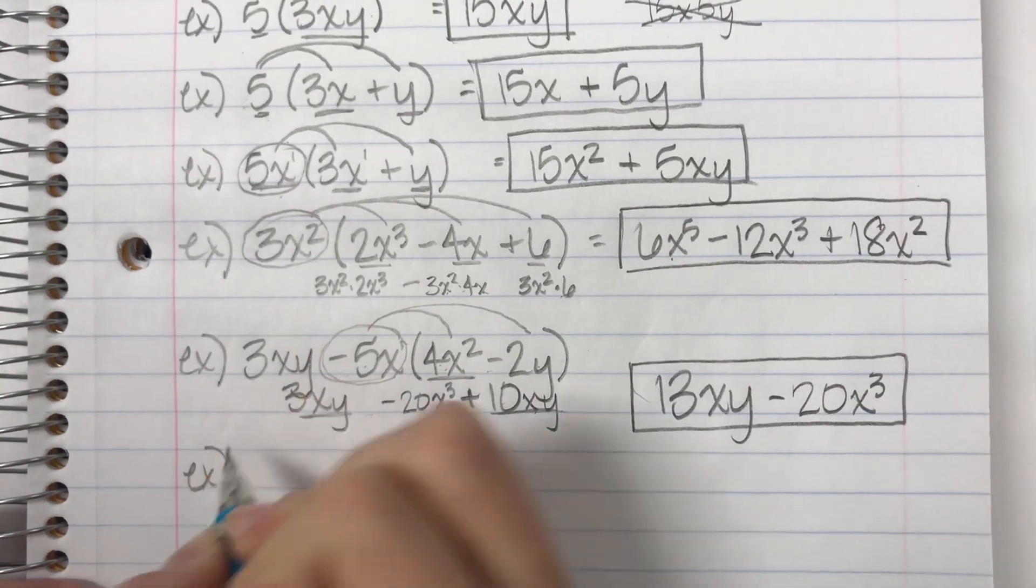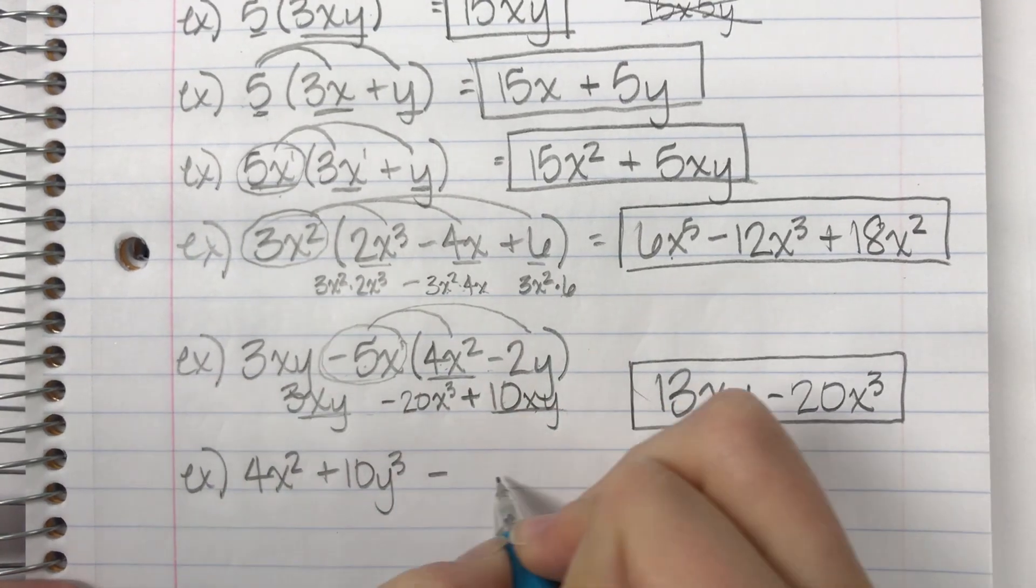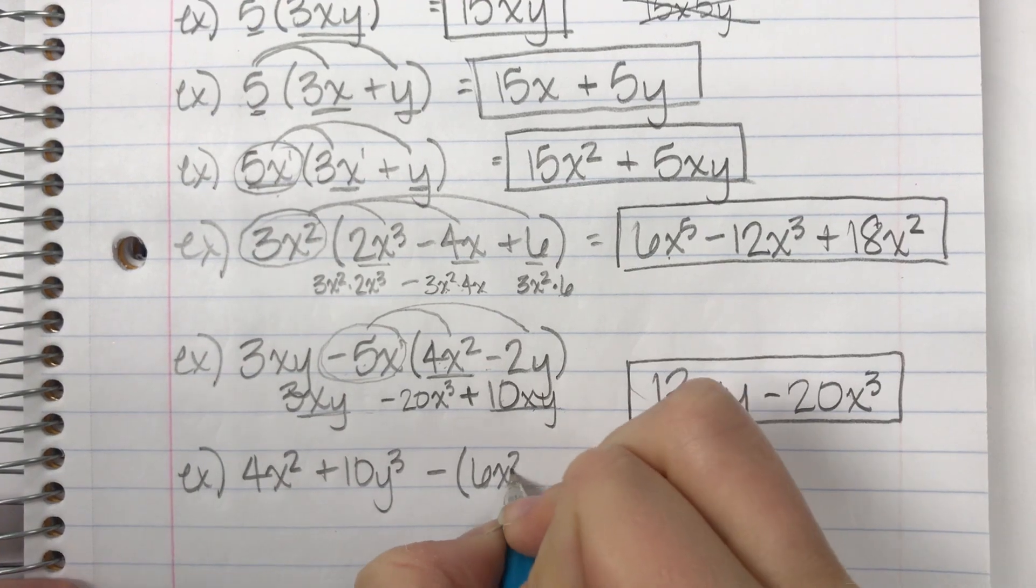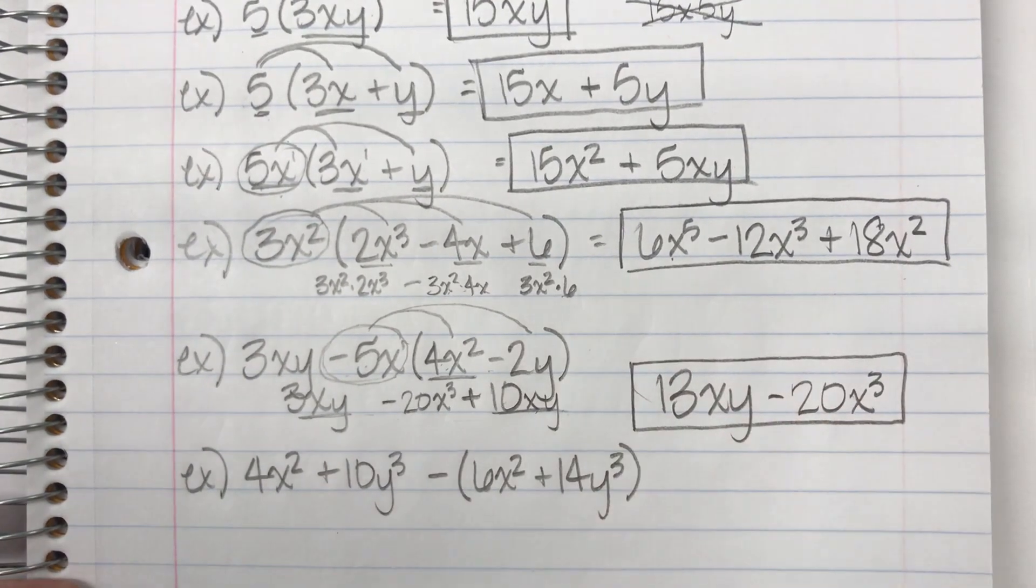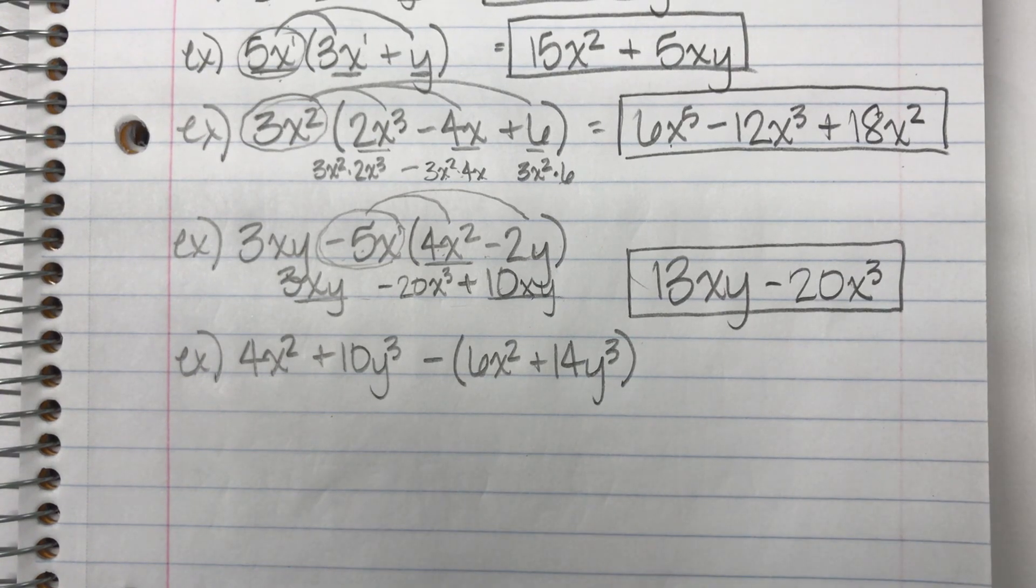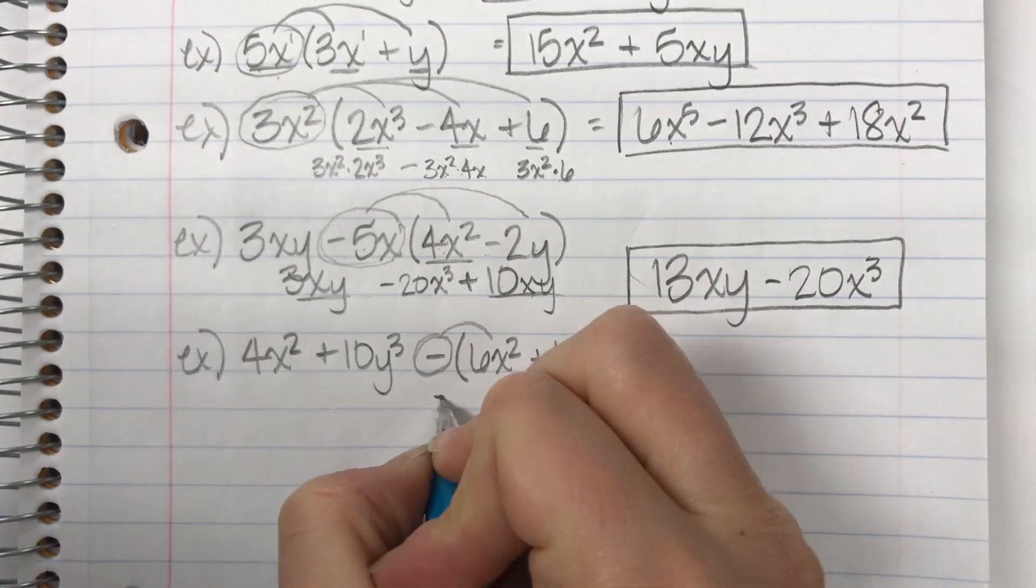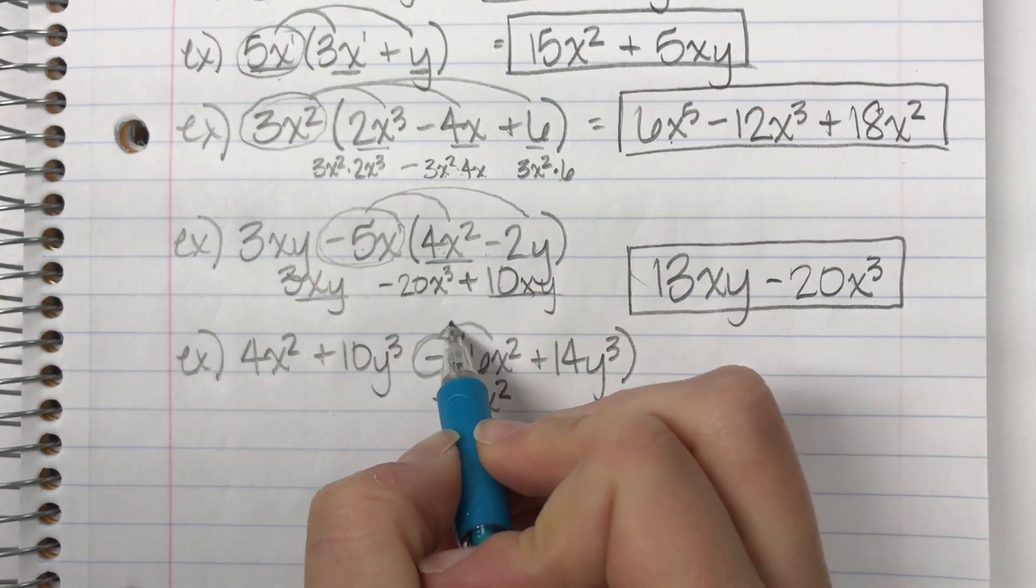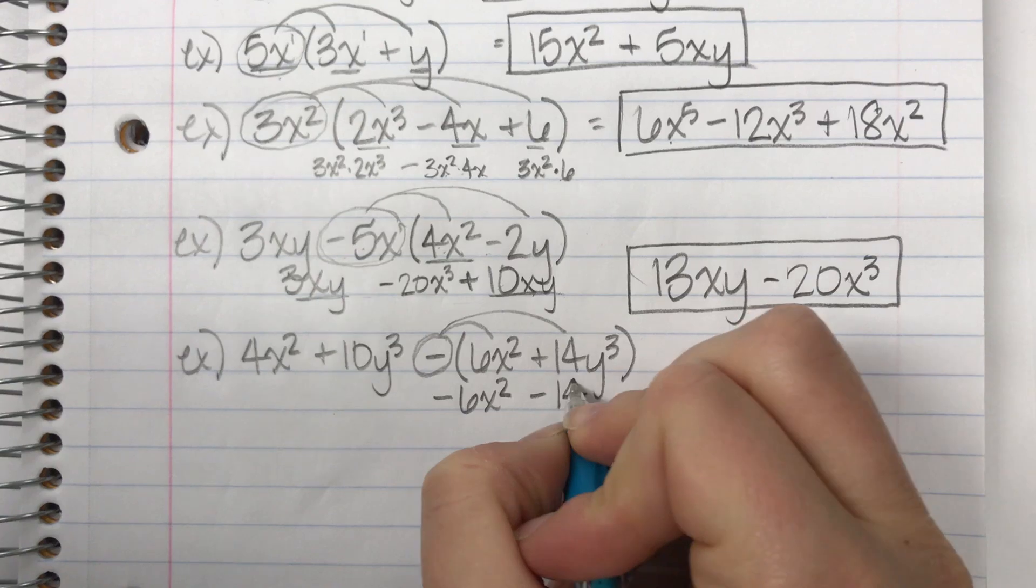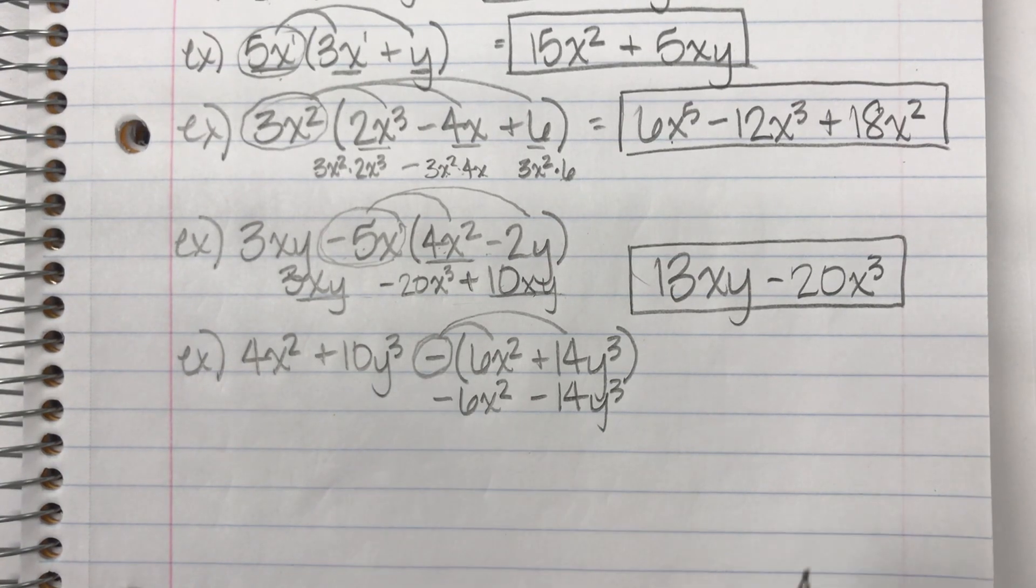Last example would be 4x squared plus 10y to the third minus parentheses 6x squared plus 14y to the third. You know how sometimes we have parentheses that are meaningless? And you end up, there's nothing to distribute. They don't mean anything. And so, you can just kind of ignore them. This is not one of those situations. Look at it and try and figure out what are we distributing here? It is the negative. We've seen these before, but it's been a while. So, that's going to become a negative 6x squared. And when I distribute the negative to the 14, it's going to become negative 14y to the third. So, sometimes, like here, we are distributing the negative 5x. Well, you may only be distributing a negative. So, I'm going to cross that out so I don't confuse myself.